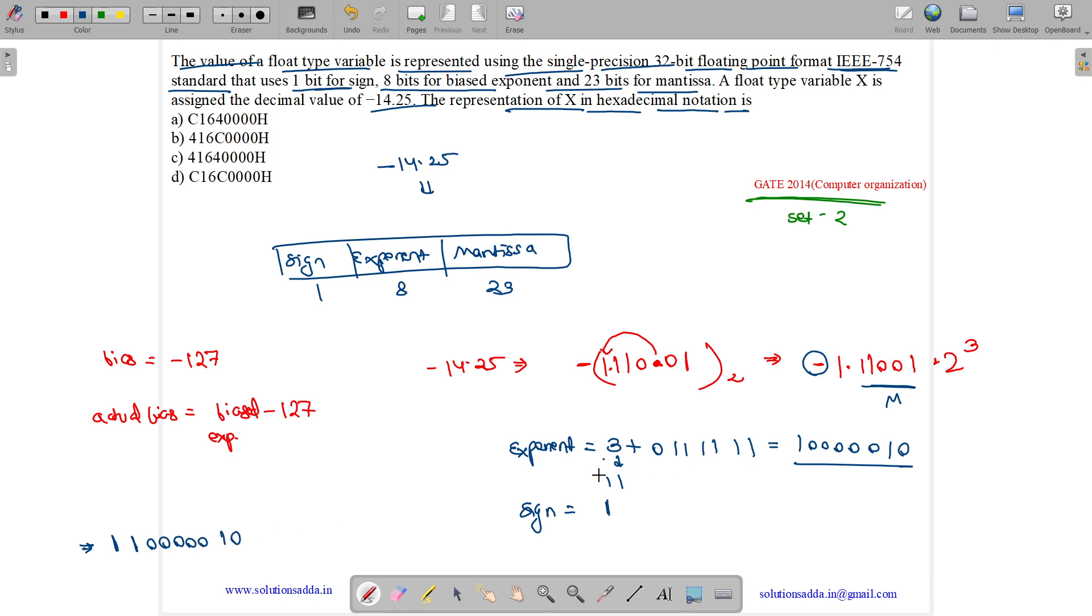What is our mantissa? Mantissa is 11001. But we need to extend it to 23 bits. So we will have 18 more zeros after this.